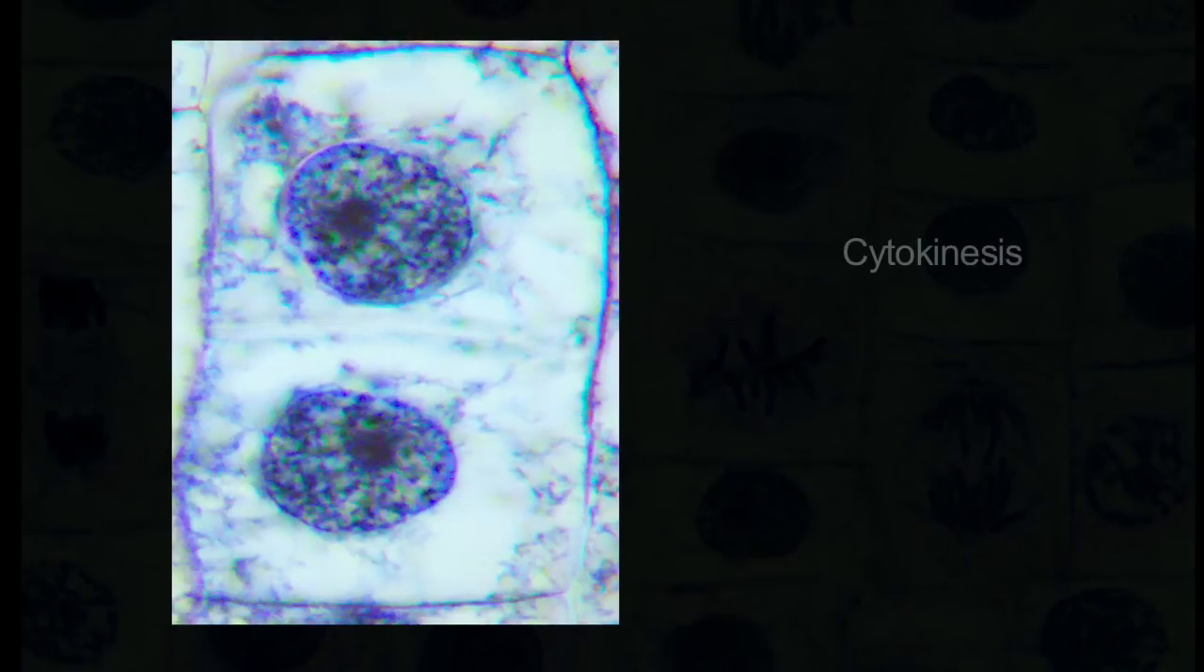After completion of nuclear division, a plate can be seen to grow across the equator of the cell, separating the two halves, and this is called cytokinesis, or the division of the cytoplasm. The result is two complete and identical daughter cells, which then go into interphase and carry out normal cellular activities.